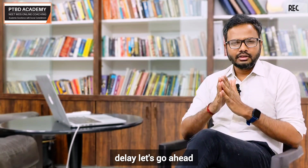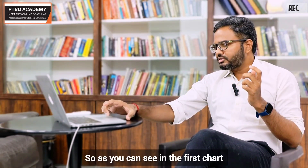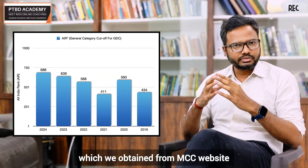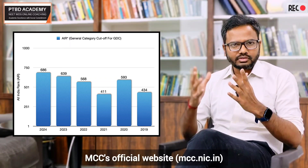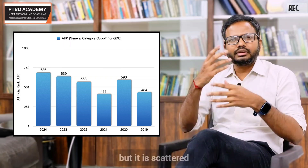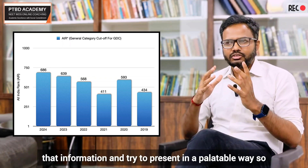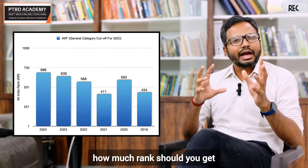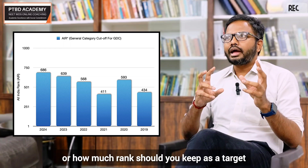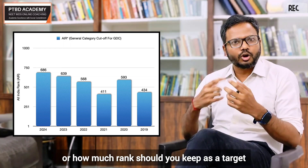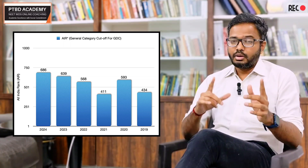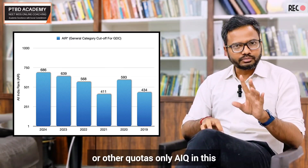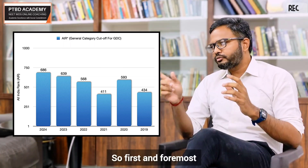We've already done a previous video presenting cutoff scores — how much you should score in NEET MDS out of 960 to get into the top 100, top 500, or top 1,000. The response was really good. In this video we're presenting cutoff ranks for various category students to get into GDC under all India quota. The data is from MCC's official website — we curated and organized it. We're discussing only all India quota in this video.